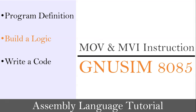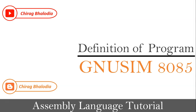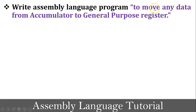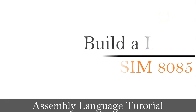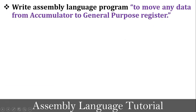Without wasting time, let's start with the first topic: definition of the program. To understand the MOV and MVI instructions, I have taken one example for the 8085 microprocessor. The definition of the program is: write an assembly language program to move any data from the accumulator to a general purpose register. In programming, first we have to build a logic and then write the code. The definition is to move any data from the accumulator to a general purpose register.